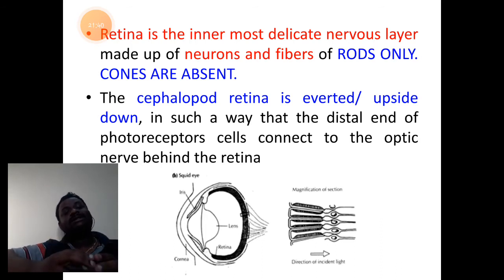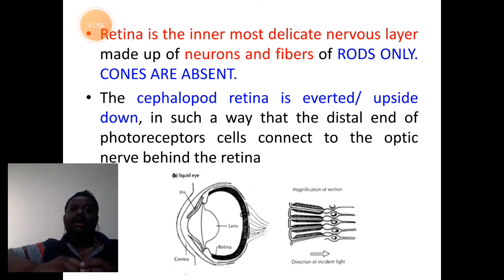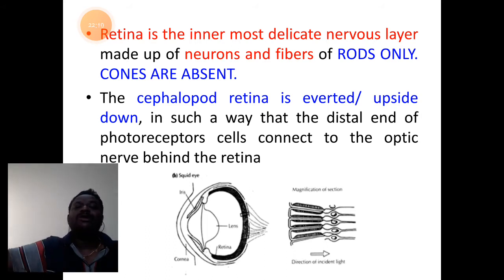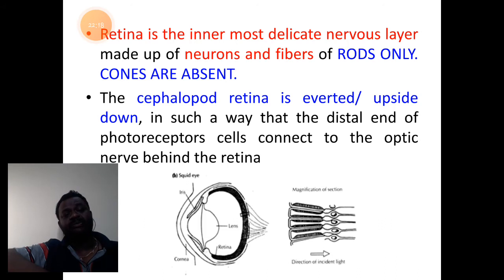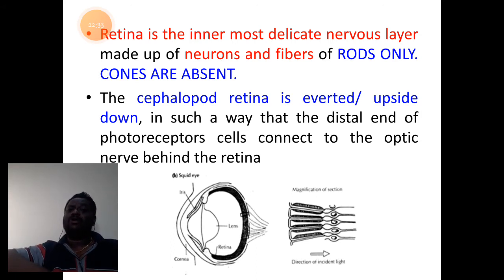Rods are sensitive cells of light during the night time and darker conditions. As the organisms live at a deeper depth of the ocean — 400 meters depth — in that dark environment alone is their habitat. They live in the dark abyssal zone and benthic zones. So rods alone are sufficient for them to capture images. That is the importance of the structures called rods in the retina.